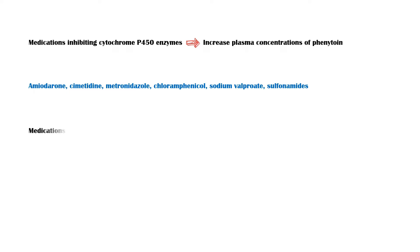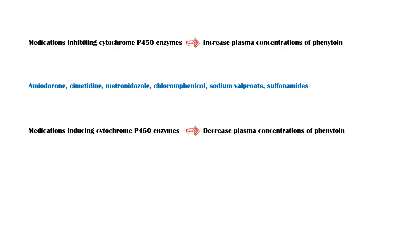By contrast, medications that induce the enzyme system will decrease the plasma concentrations of phenytoin. Some of these drugs include rifampicin, barbiturates, theophylline, and carbamazepine. Individuals who are taking these medications concurrently with phenytoin require dose adjustments according to the clinical response.